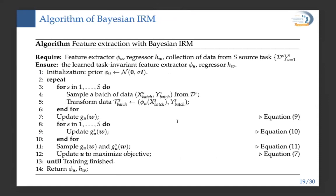In each training iteration, we sample a batch of data from each source task, transform it using the feature extractor, and update G_U and G_{US} respectively. We then use Monte Carlo samples U to maximize the objective functions until training is finished, after which we return the trained feature extractor and regressor.